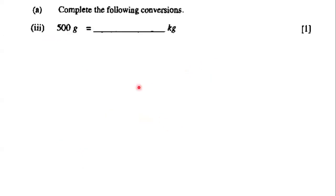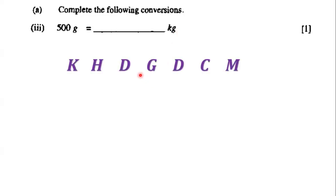Next we have 500 grams and our goal is to convert this into kilograms. We use the acronym 'Knock Him Down Grammy, Don't Commit Murder.' The K stands for kilograms, the G stands for grams, and the M stands for milligrams.